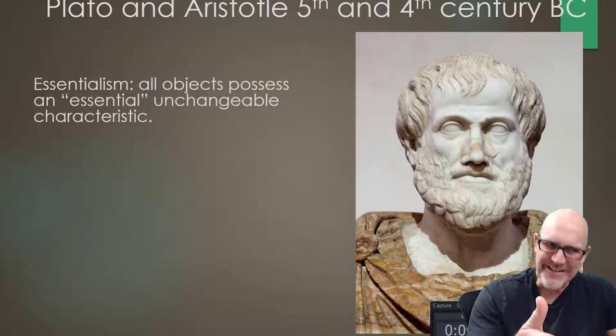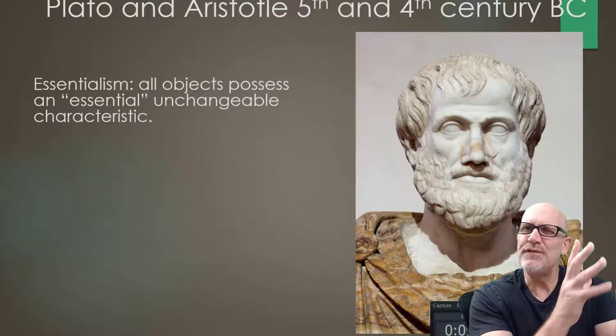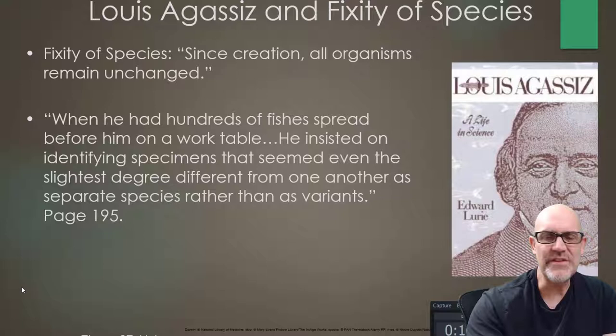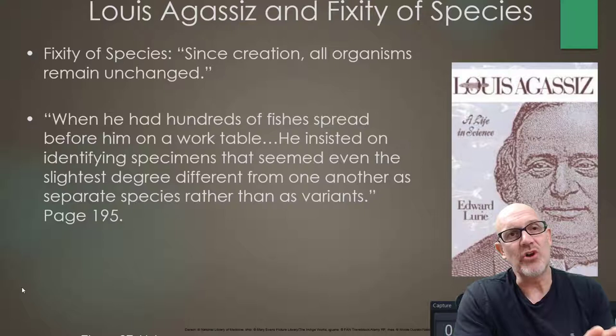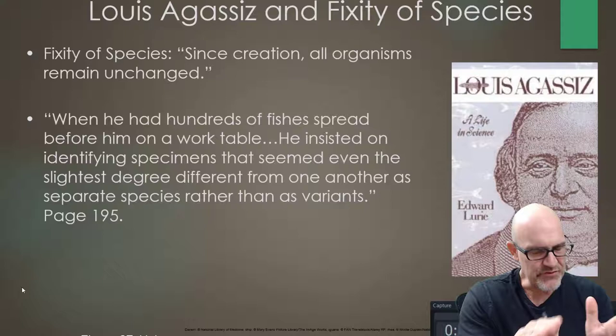And that is where the fixity of species comes from — a Platonic or Aristotelian idea that there is some essential species of a bird, for example, and it can't change. That bird represents some essential form or idea in the mind of God, and it's unchangeable. We know today that this idea is certainly not true. There were actually a group of scientists called nature philosophers who actually differed from fixity of species ideas, but we'll have to talk about that another day.